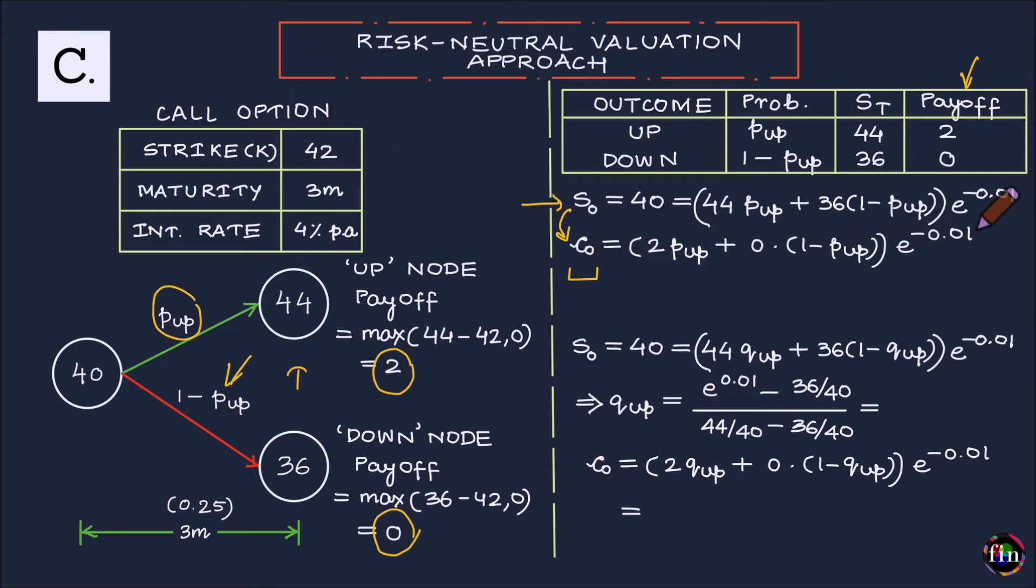The reason why the discount rate which is an appropriate discount rate for this equation doesn't fit in this equation is because the risk embedded in a European call is different from the risk embedded in the underlying stock. We know that a European call option is a leveraged play. A European call option has more embedded risk as compared to the underlying stock.